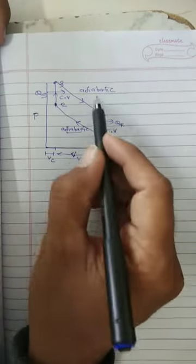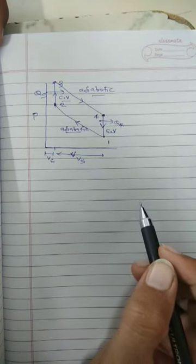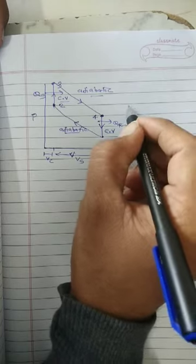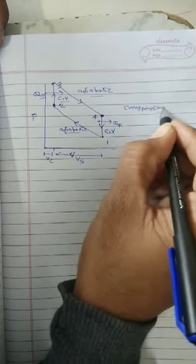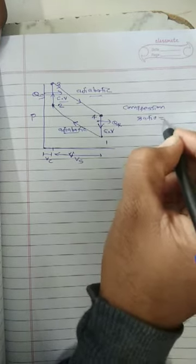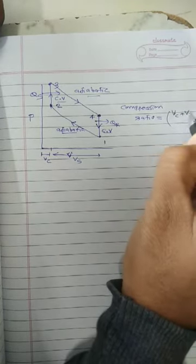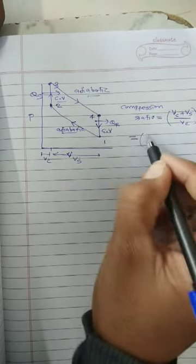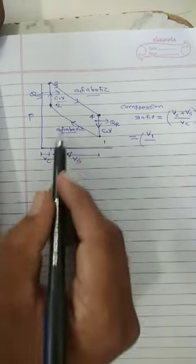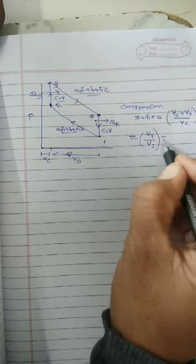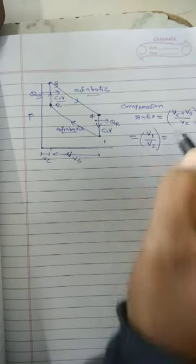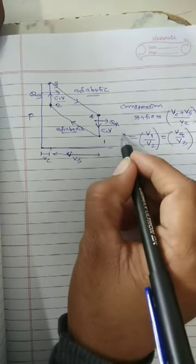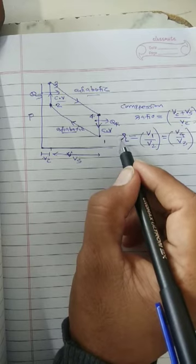So you can see that 2 processes are adiabatic and 2 processes are constant volume. Now our main aim is to prove the equation of efficiency, but before that we need to know the compression ratio. Compression ratio means VC plus VS divided by VC, which is V1 divided by V2 — also written as V4 by V3 — and it is denoted by small r.